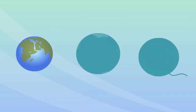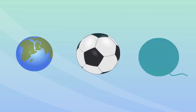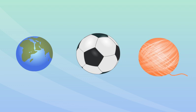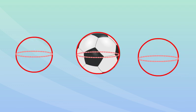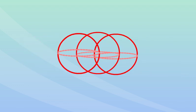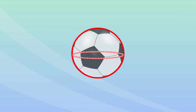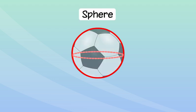A globe, a football and a wooden ball have the shape of a sphere. The objects which are in the shape of a ball are called spheres. A sphere has only one curved surface. Clearly, a sphere doesn't have any edges and vertices.